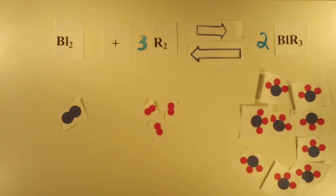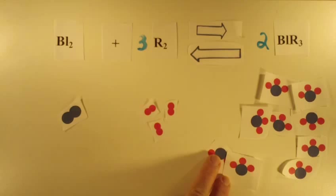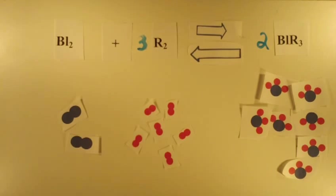When they do, we now have one set of molecules on the left. Another two right side molecules can come together to form another set of left side molecules. One blue molecule and three more reds.